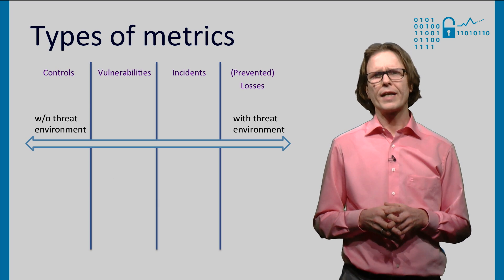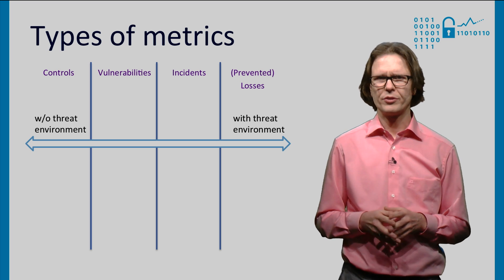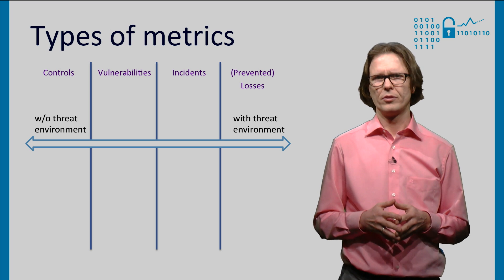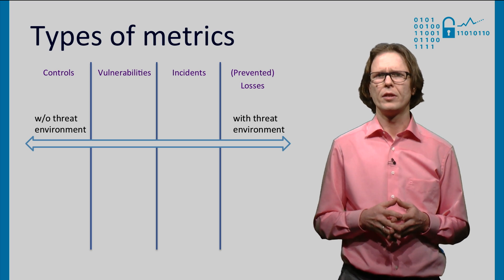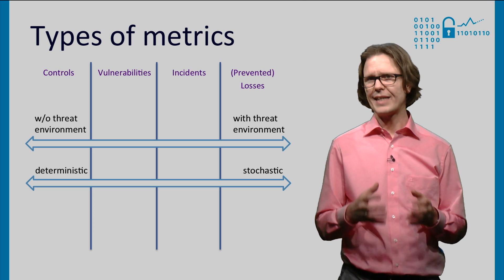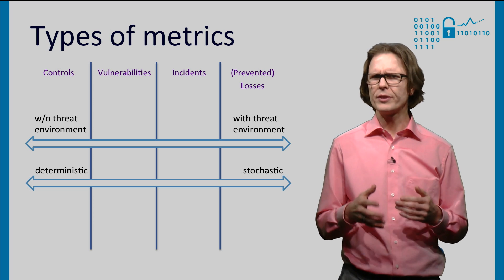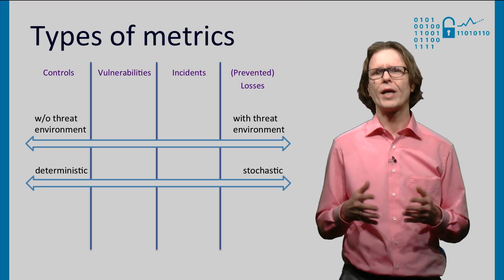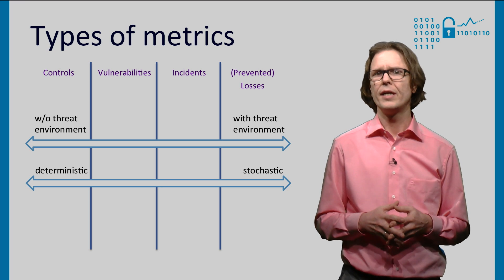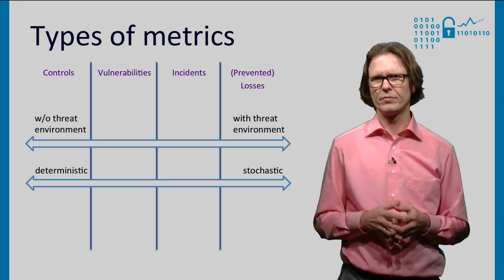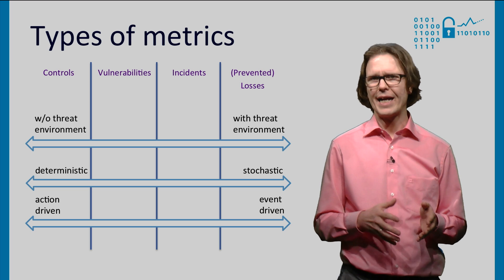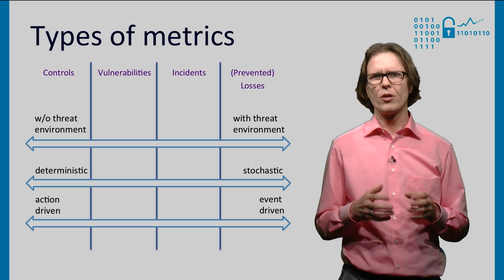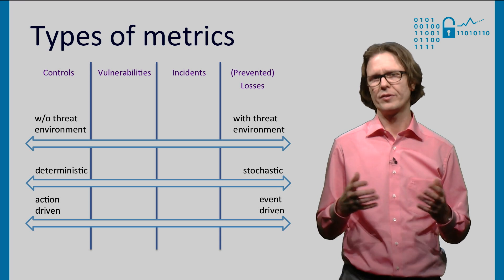To conclude, we have classified different types of security metrics in four categories. Each category relates differently to the threat environment. Controls exclude the threat environment. Vulnerabilities keep it static. These metrics are therefore deterministic. Incidents and prevented losses are stochastic, as they are driven by unknown attacker behavior as well as the actions of the defender. Similarly, controls are mainly driven by actions — for instance, acquiring a new firewall — while incidents and losses are driven by events, for example a data breach.